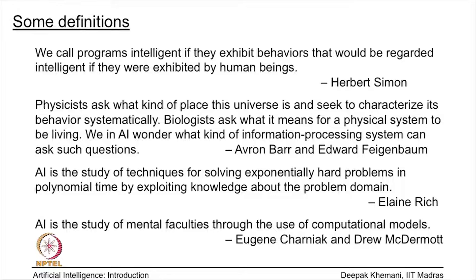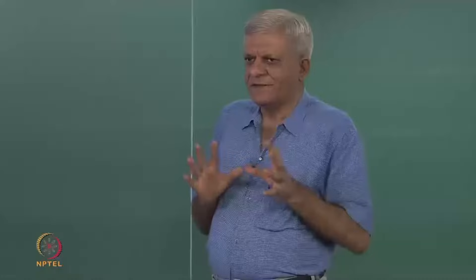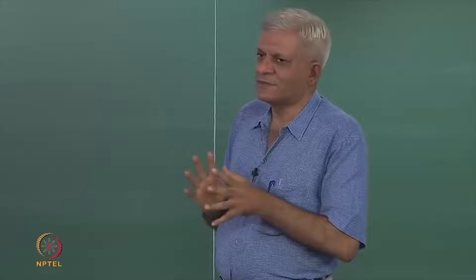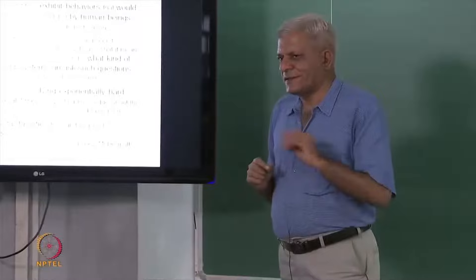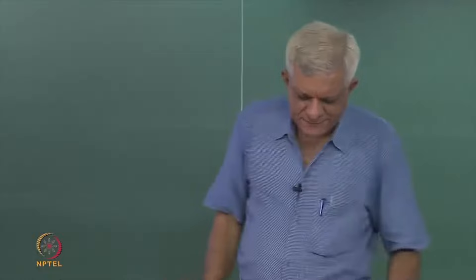Charniak and McDermott talk about AI being the study of mental faculties through the use of computational models. As mentioned earlier, there are two approaches to AI: one is the cognitive approach, which tries to understand intelligence, and the other is the engineering approach, which wants to build smart systems. What this definition says is that we want to study mental faculties and to do that, we build computational models.